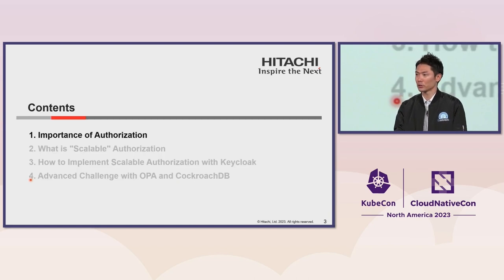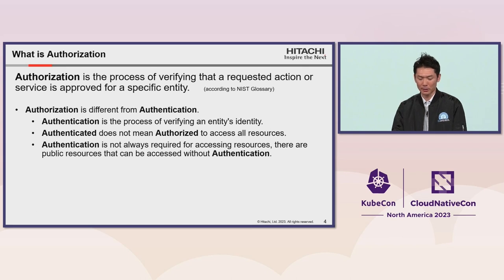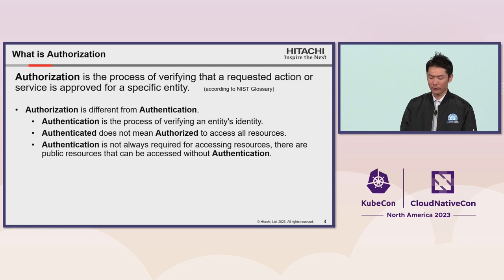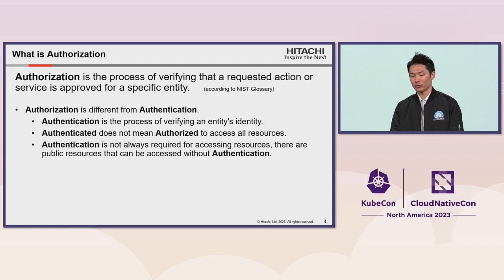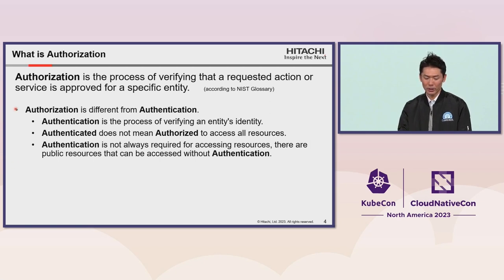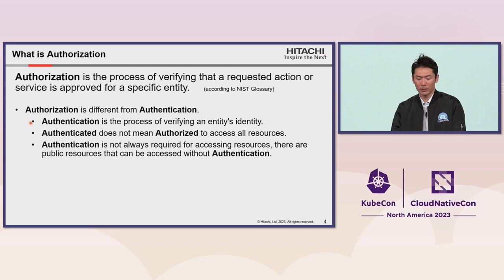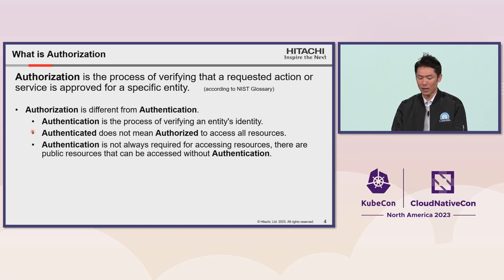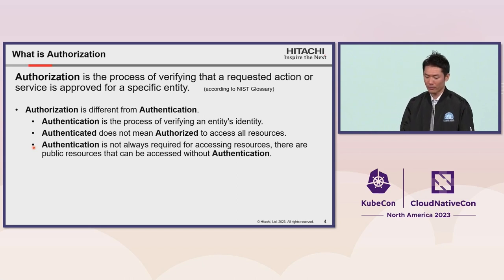First, what is authorization? Authorization is the process of verifying that a requested action or service is approved for a specific entity. The important point is that authorization is different from authentication. Authentication is the process of verifying an entity's identity. Being authenticated doesn't mean being authorized to access all resources. For example, a general user should not be authorized to access administrator features even if they were authenticated. Also, authentication is not always required for accessing resources — there are public resources that can be accessed without authentication. It is important to clearly distinguish between authentication and authorization.